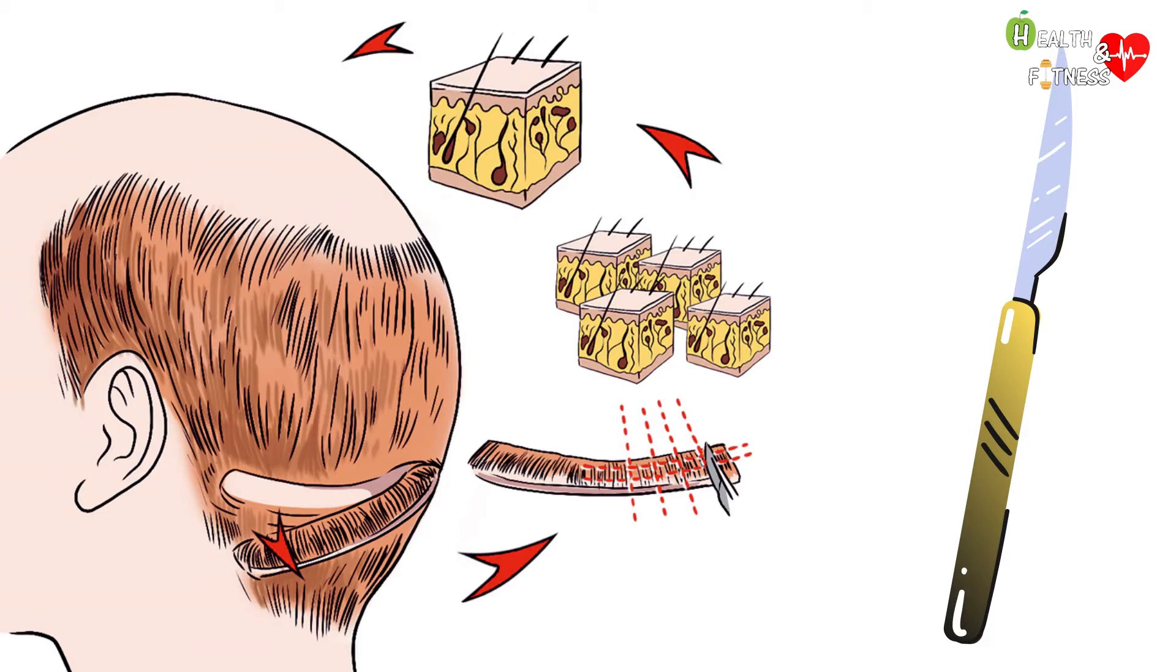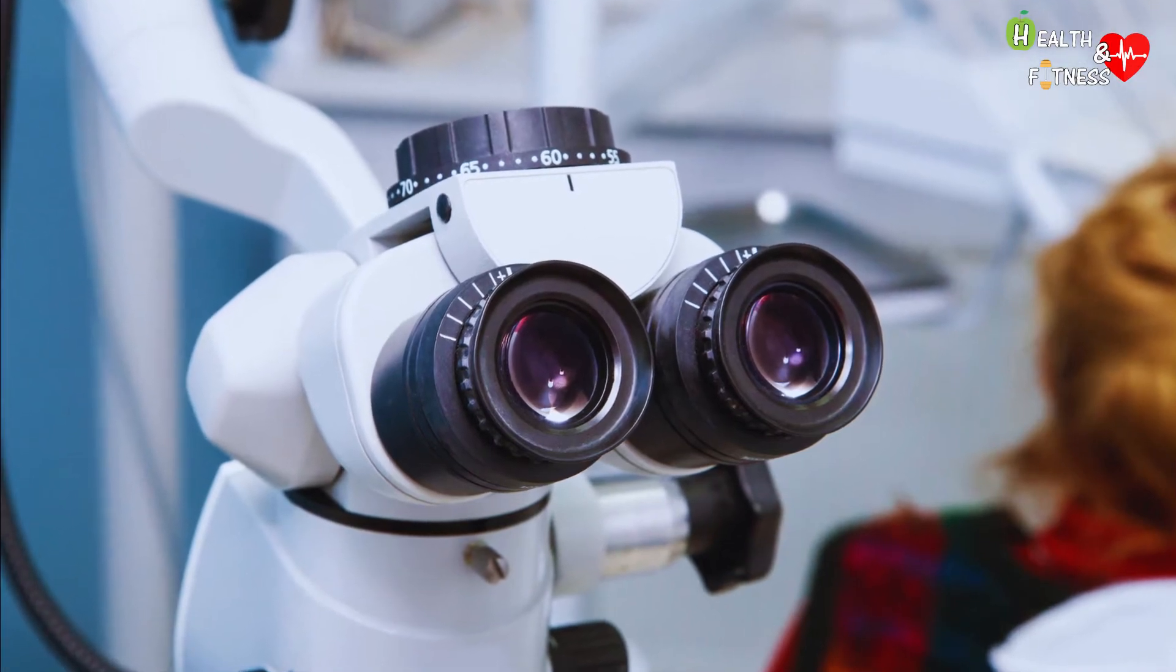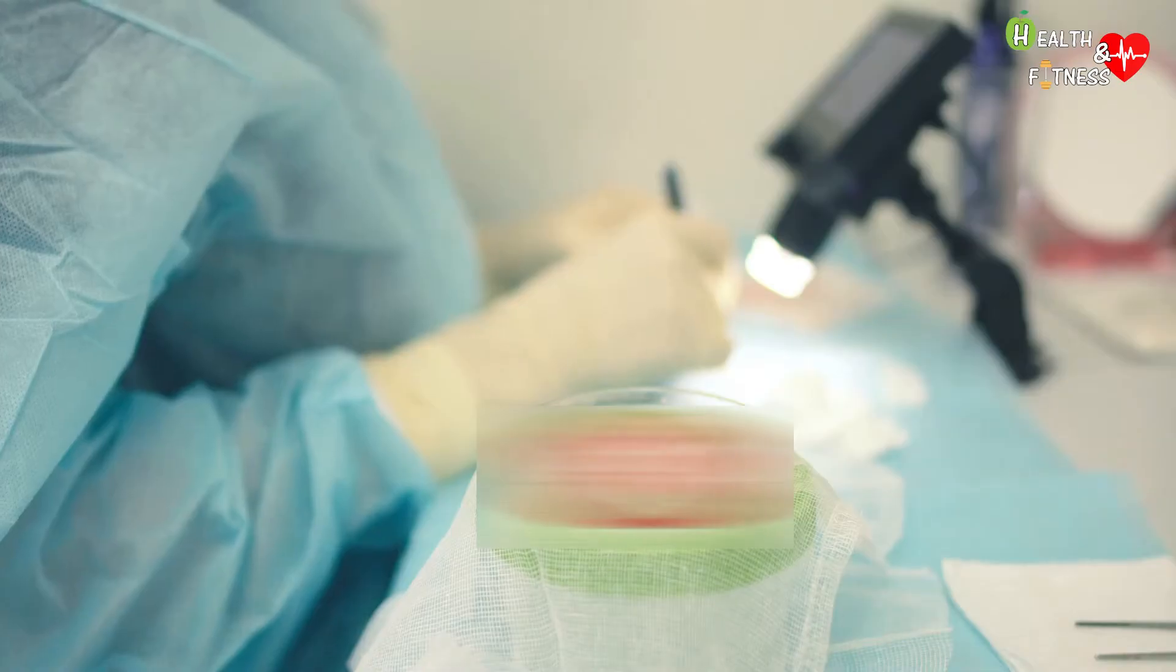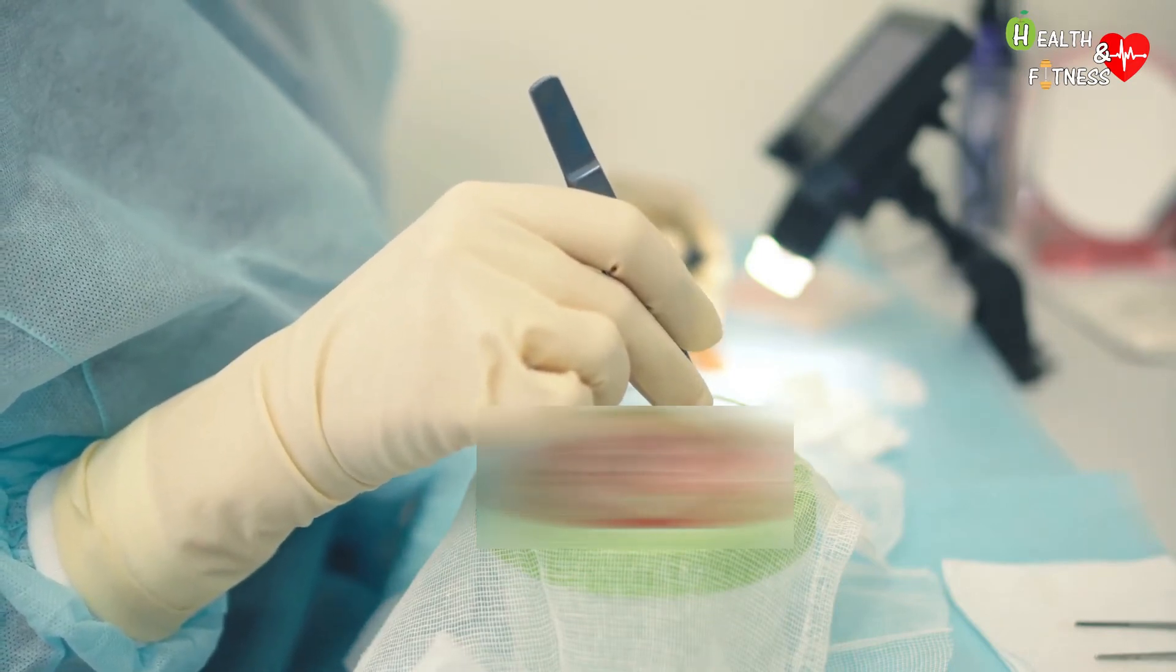At this point, an assistant with the use of special binocular microscopes separates the groups of follicular units from the strip and removes the excess of fibrous and adipose tissues, being careful not to damage the cells of the follicle.